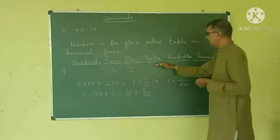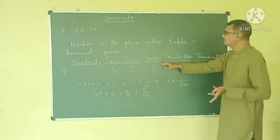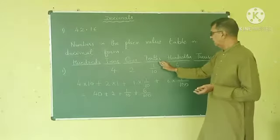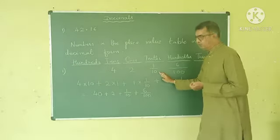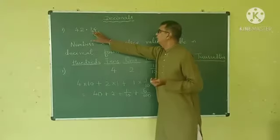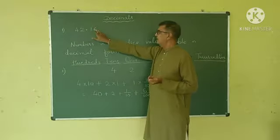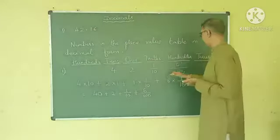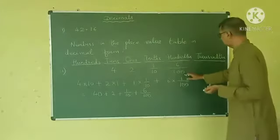Decimal, where I go here in the tenths column, 1 upon 10 and here is 6 after 1, 2 places, 2nd place away from the decimal point. So I write here, 6 upon 100.